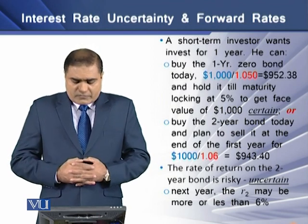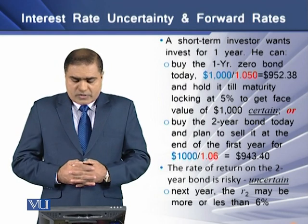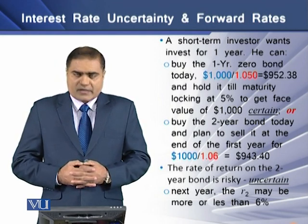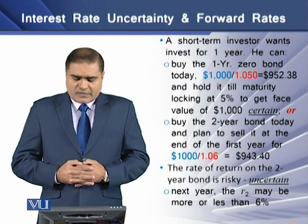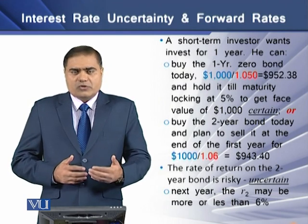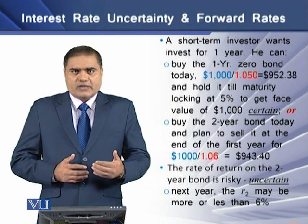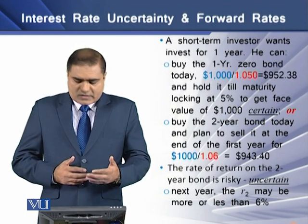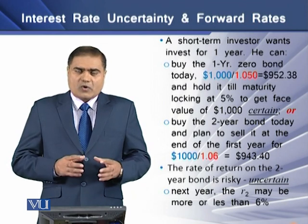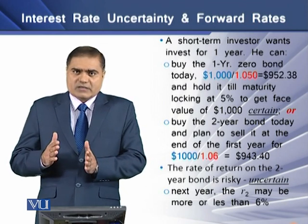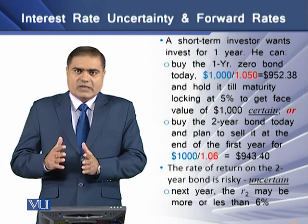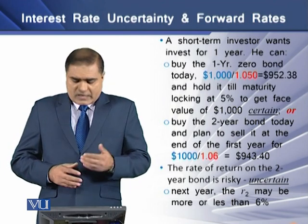The second option is where he buys this 2-year bond today and plans to sell it at the end of the first year for 943.40 dollars, where the rate used to discount is 6 percent. The rate of return on the 2-year bond is risky because it is now working in the world of uncertainty.